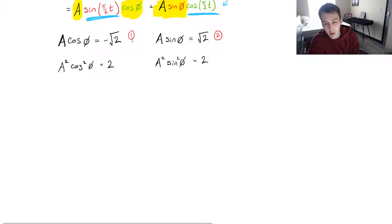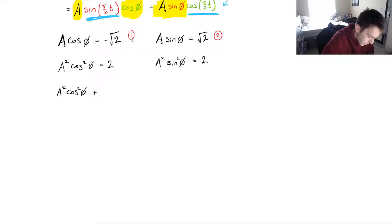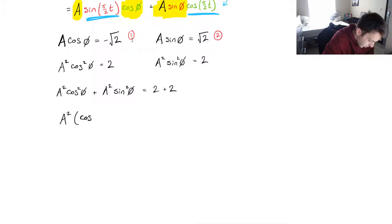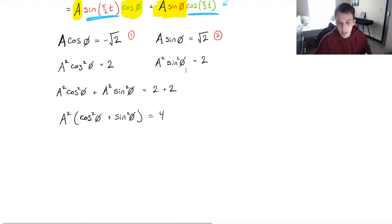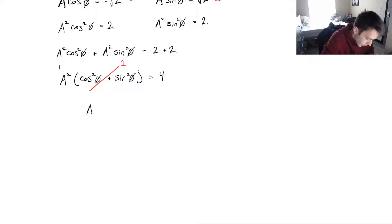We can add the equations — similar to elimination. We get A squared cosine squared phi from the first, plus A squared sine squared phi from the second, equal to 2 plus 2. Factoring out A squared, we're left with cosine squared phi plus sine squared phi, which equals 4. That's the Pythagorean identity, which equals 1. So A squared equals 4, or A equals plus or minus 2.